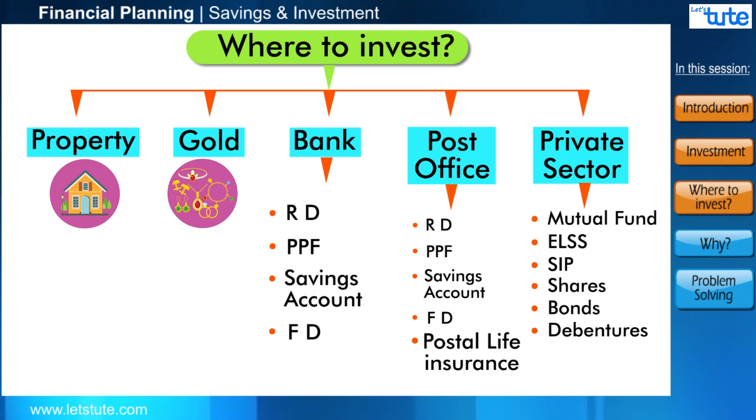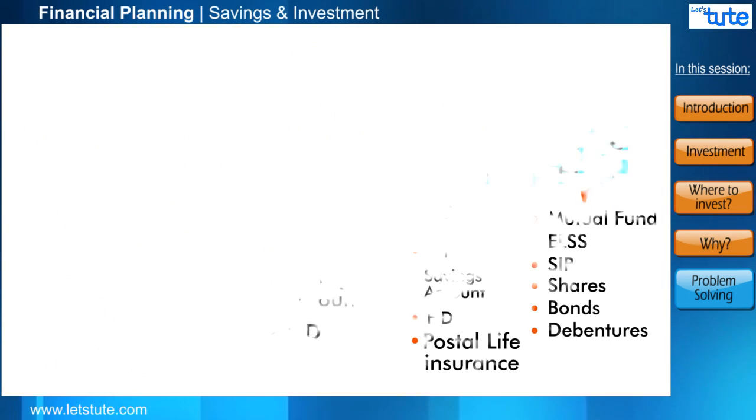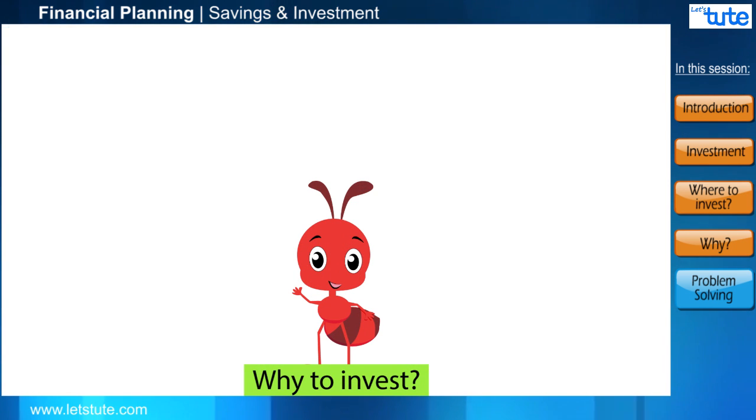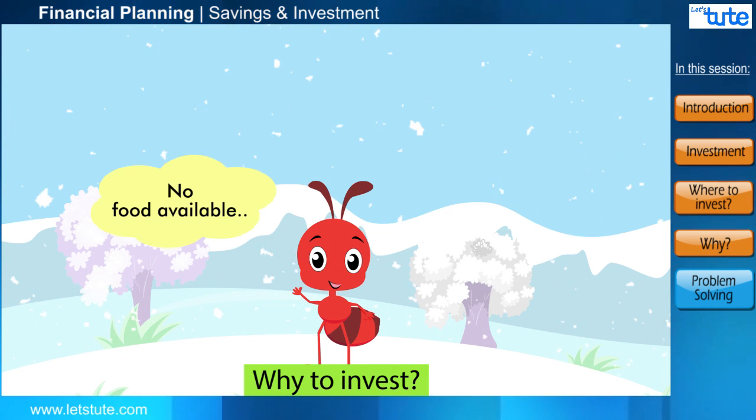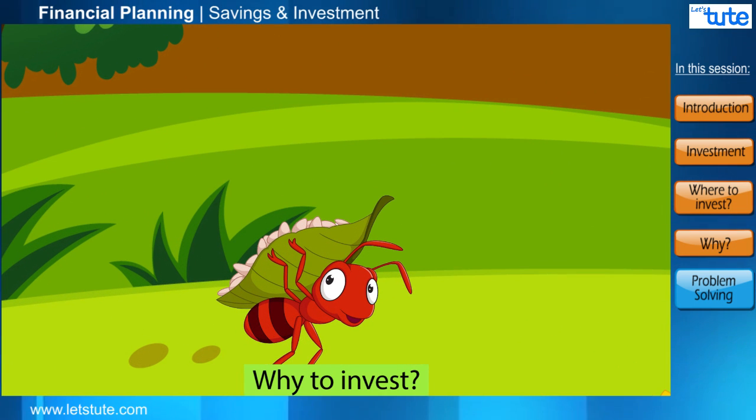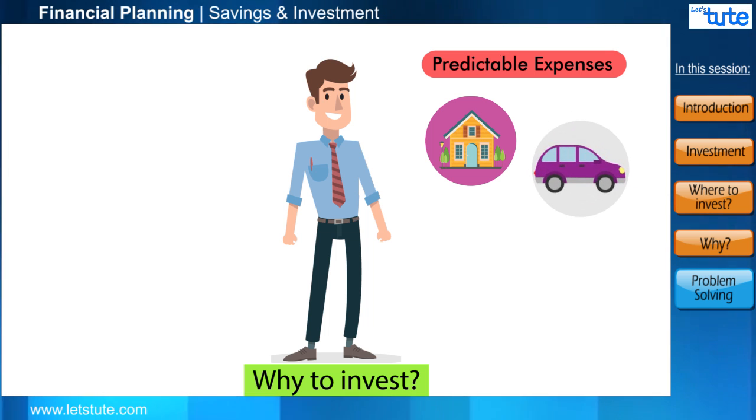You have a variety of options in private sector like mutual funds, ELSS, SIP, shares, bonds, debentures, etc. But why do we need to save and make these investments? We need to start to think like the ant. In the story, winter was coming and the ant knew there would not be much food available, hence the ant saved. In a similar way, we can save for a variety of predictable expenses like buying a house, buying a car, saving for a child's education, or building your business.